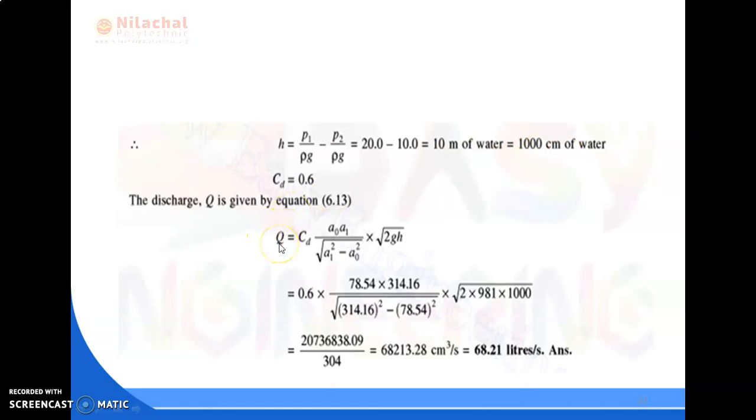We know the formula for discharge: Q = Cd × A₀A₁ / √(A₁² - A₀²) × √(2gH). Putting all the values, after calculation we found the value is 6821.28 cm³/s, or after conversion to liters, the answer will be 68.21 liters per second.